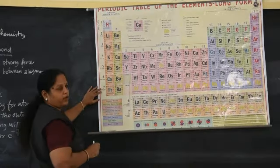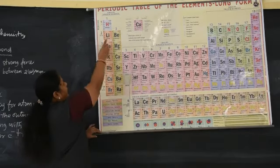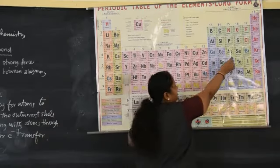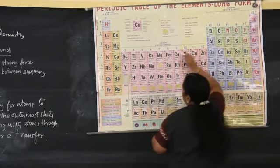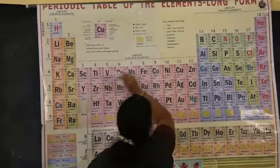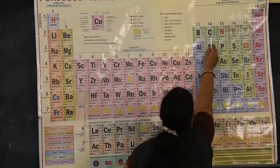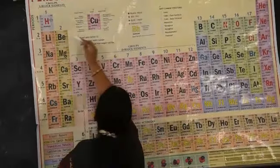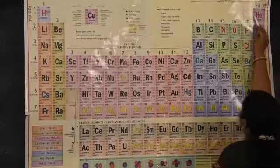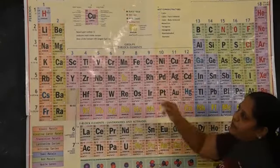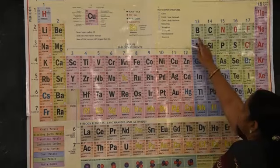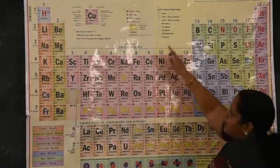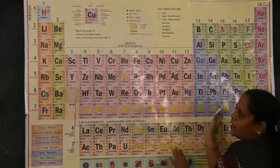In this periodic table, the first element is hydrogen, second is helium, third is lithium, fourth is beryllium, then boron, carbon, nitrogen. The atomic number of hydrogen is 1, helium is 2, lithium 3, beryllium 4, boron 5. So the elements are arranged in the periodic table in increasing order of atomic number.